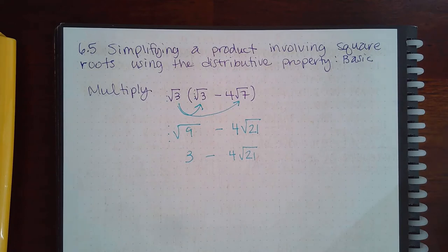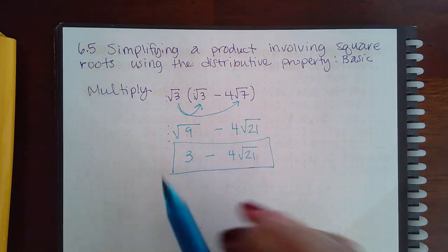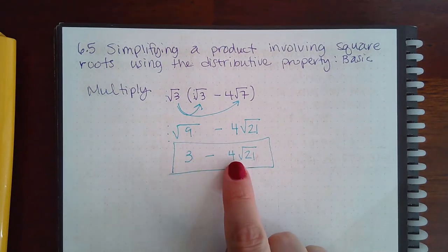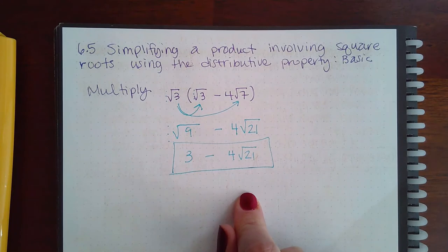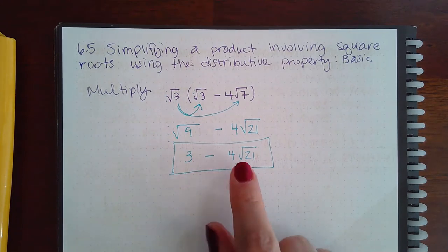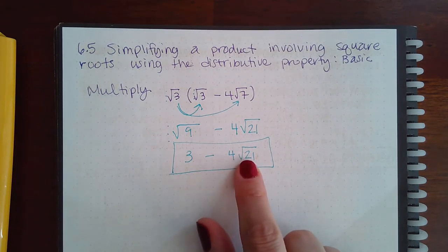Now remember, you cannot do 3 minus 4 to get negative square root of 21, because our order of operations says we must multiply first before we can subtract.